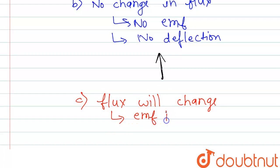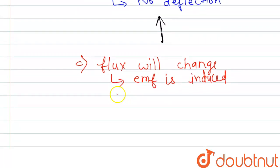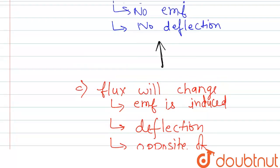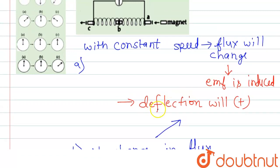So EMF is induced. So there will be a deflection, and it will be opposite of the deflection when the magnet was entering.